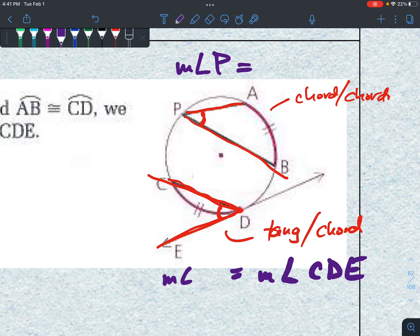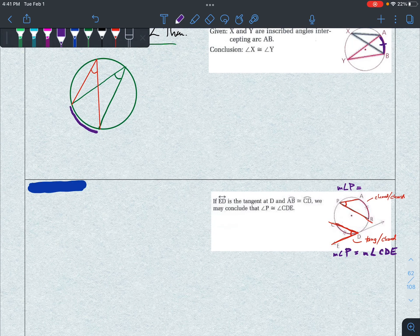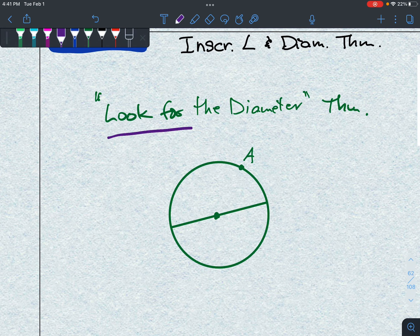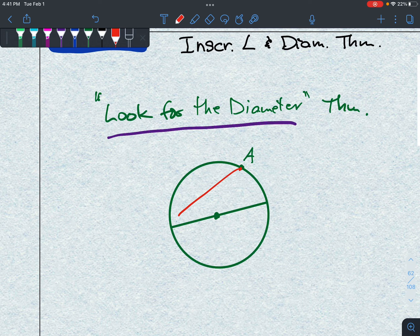Those two angles have to be the same given that they're the same chords. This next one here I think is useful to write down, so get this in your notes. I'm going to call it the look-for-diameter theorem.